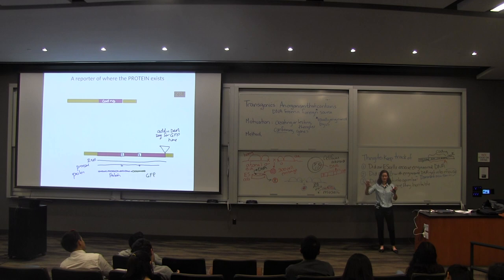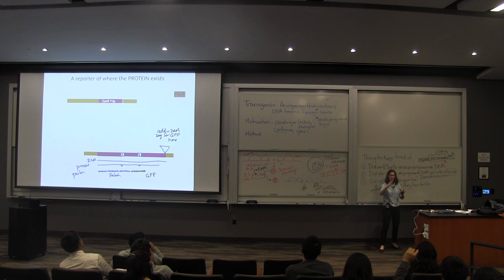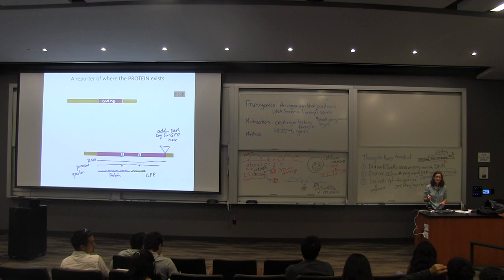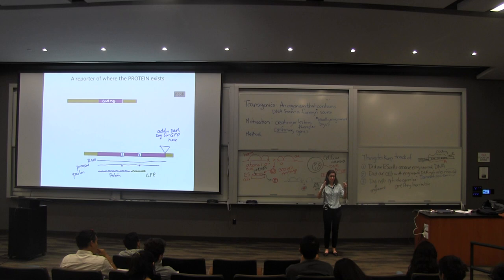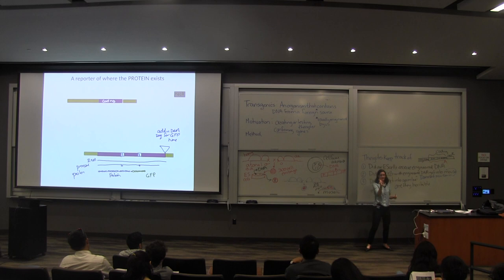That was a lot of information — any questions? A student asks about expression in certain areas. The reason it was expressed only in certain areas is that the specific regulatory region we chose — related to one gene — contained the information to only turn on in certain cells.